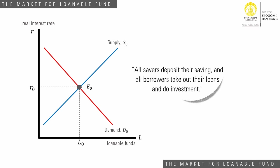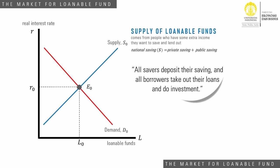All savers go to this market to deposit their saving, and all borrowers go to this market to take out their loans and do investment. Like other markets in the economy, the market for loanable funds is governed by supply and demand. We have saving — including private and public saving — as the source of the supply of loanable funds.